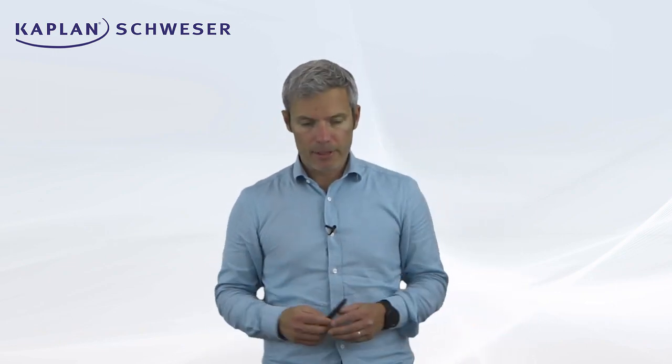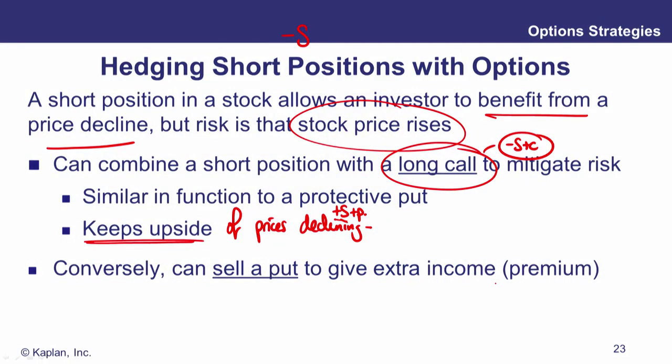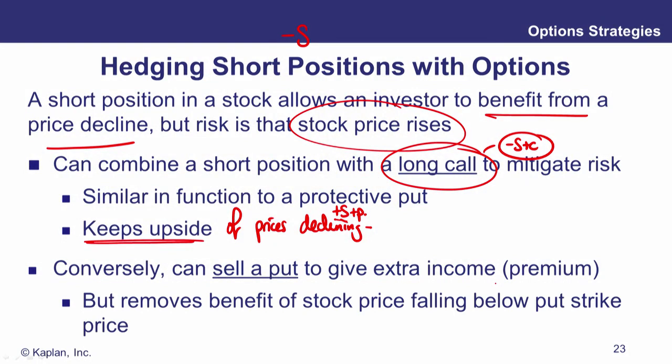The other thing that you could do is not quite such a good hedge in terms of buying protection. You could sell a put to generate income against a short position. That will take the edge off prices rising because the put wouldn't be exercised and you'd just keep the premium if prices went up. However, that does remove the benefit of stock prices falling because as the stock price falls below the put strike, you'll start losing under a short put.